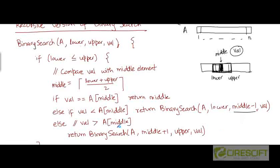If the value we are searching for is larger than the middle element, we search within the right half of the sub-array. We make a recursive call keeping the upper index the same, but changing the lower index to middle plus one, since middle plus one is the first element in the right half. The array a, the value val, and the upper index remain the same.